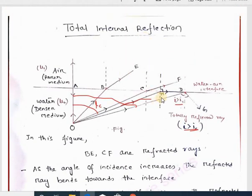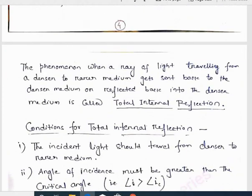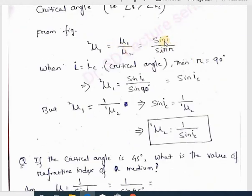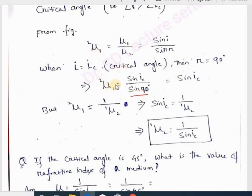From Snell's law: sin(i) / sin(r) = mu1 / mu2. When the angle of incidence i equals the critical angle ic, the angle of refraction r is 90 degrees. Substituting: 2mu1 = sin(ic) / sin(90°) = sin(ic). Since 2mu1 = 1 / (1mu2), we get sin(ic) = 1 / (1mu2). This formula is very important for numerical purposes.